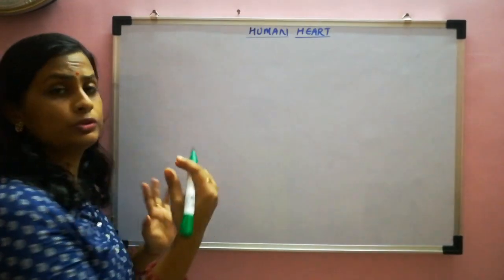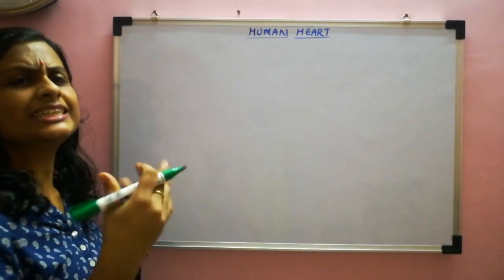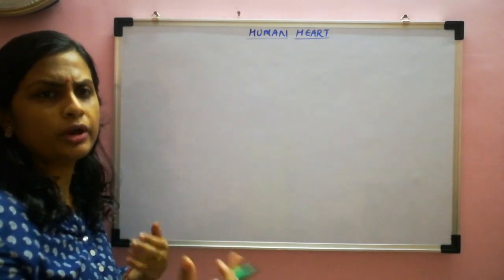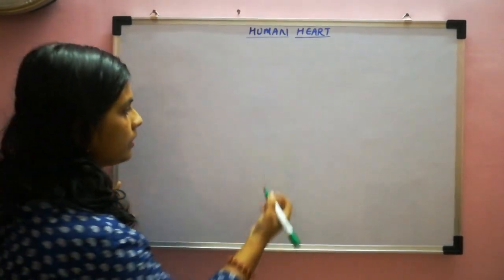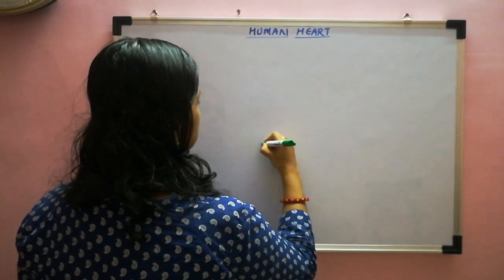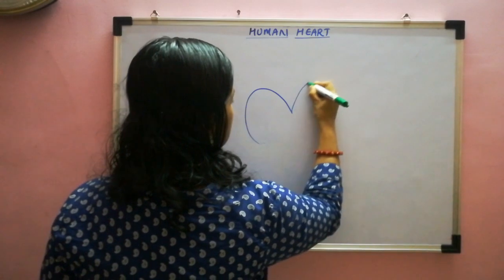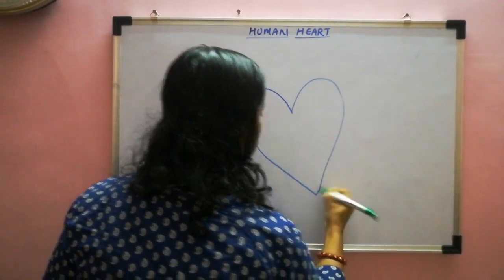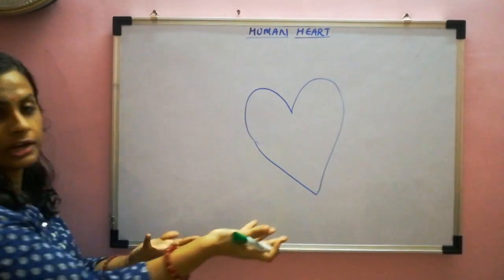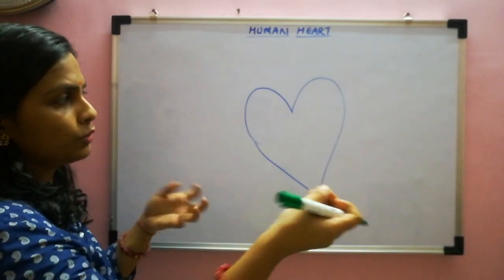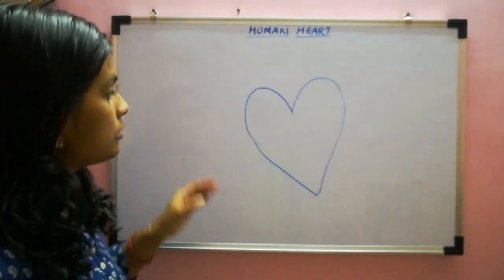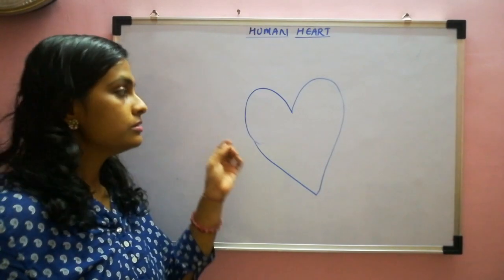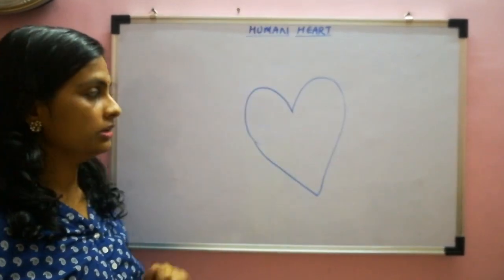The first thing we have to draw is the basic structure of the heart — the common heart shape which we use to draw everywhere, like on cards or anything. So we will draw that.